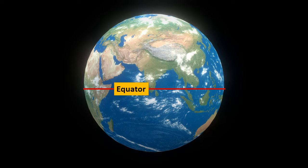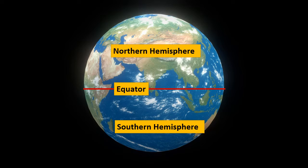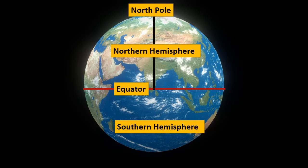The equator separates the earth into two hemispheres: Northern and Southern Hemisphere. Hemisphere means half of the earth. The Northern Hemisphere is the northern half of the earth — it starts at 0 degree latitude, meaning the equator, and continues north to 90 degree north latitude at the North Pole. The Southern Hemisphere is the southern half of the earth; it also starts at 0 degree latitude and continues south to 90 degree south latitude at the South Pole.